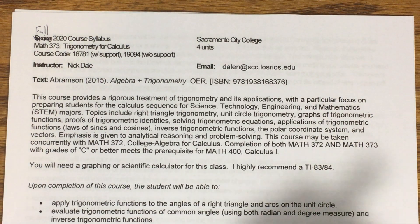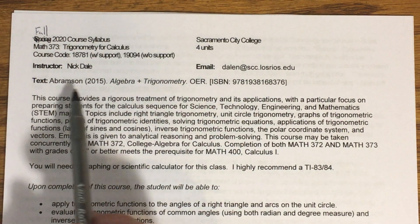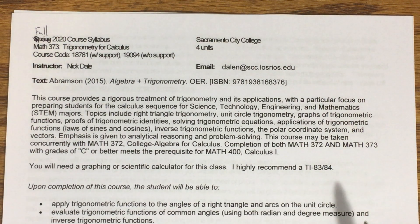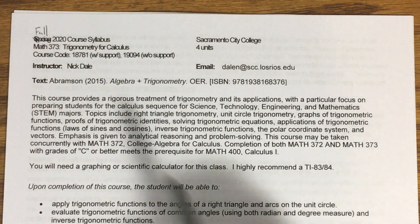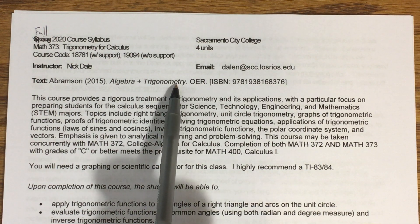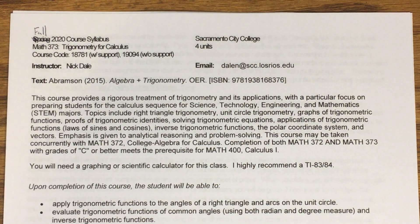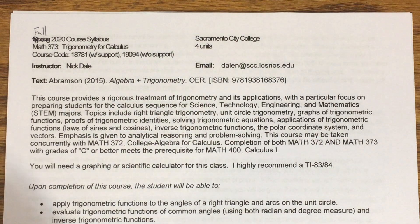Let's go over what we're doing in this course and how we're going to structure things. The textbook we're using is actually a free textbook, available on OpenStax.org. It's called Algebra and Trigonometry. This can be used for an algebra-trig combo course, but because we're only doing trigonometry, we're only going to be covering chapters 7 through 10. That's available for free — you can purchase a hard copy if you want, but I recommend just downloading it for free.